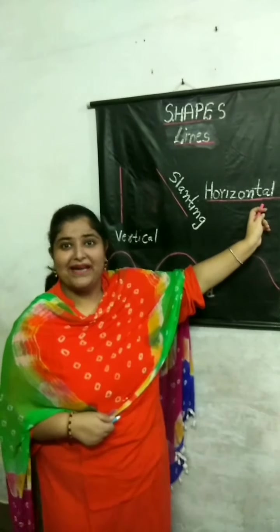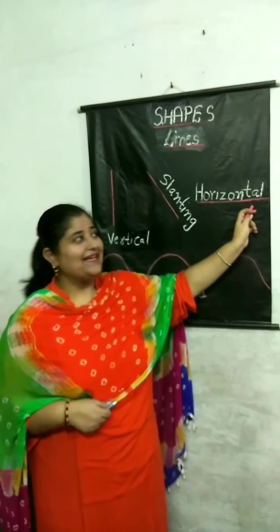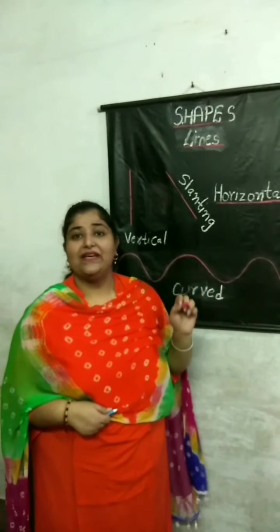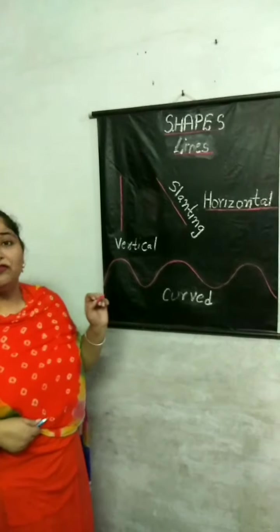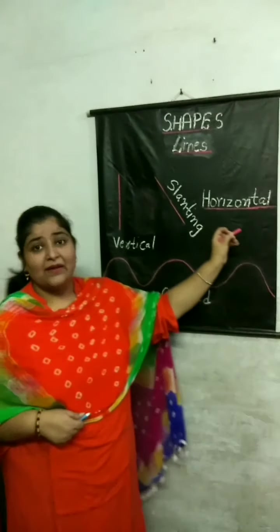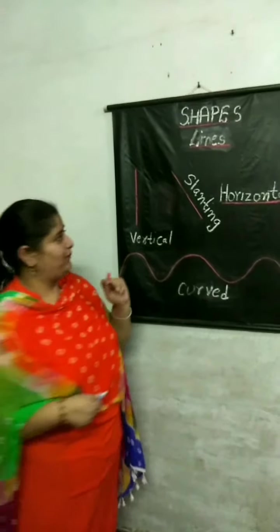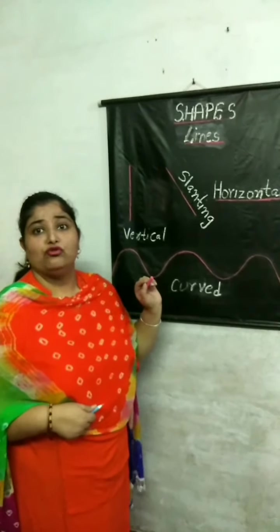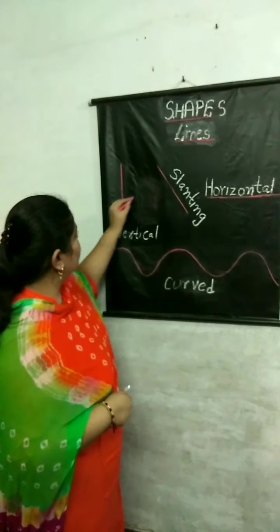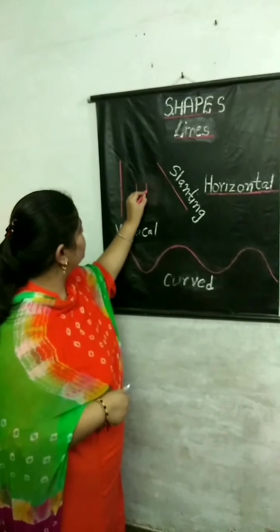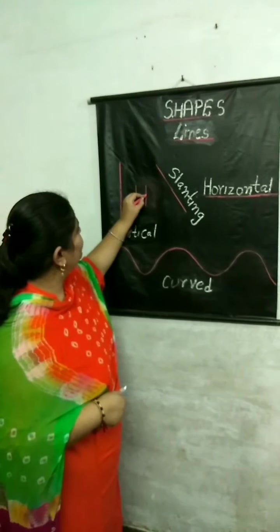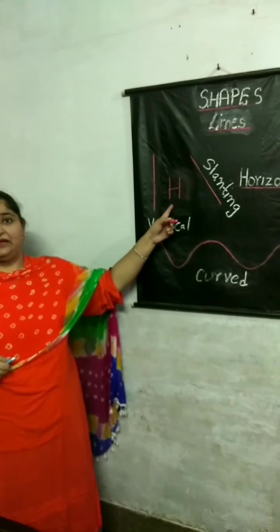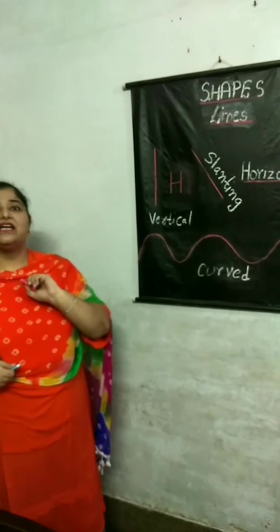We call the horizontal line a sleeping line also. Now, my dear students, you all know we can draw numbers and write alphabets with the help of these lines. For example, if you have to draw H, you will draw two standing lines and a sleeping line in between, and then you can make the alphabet H.